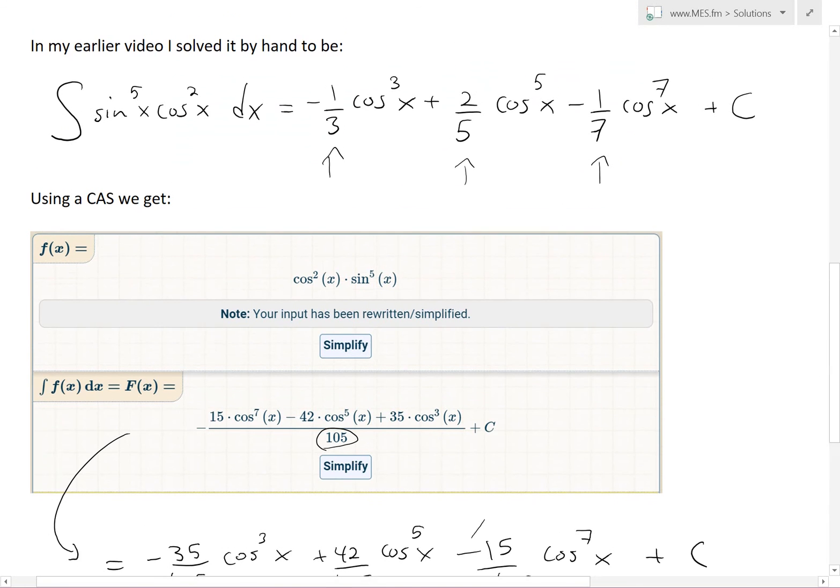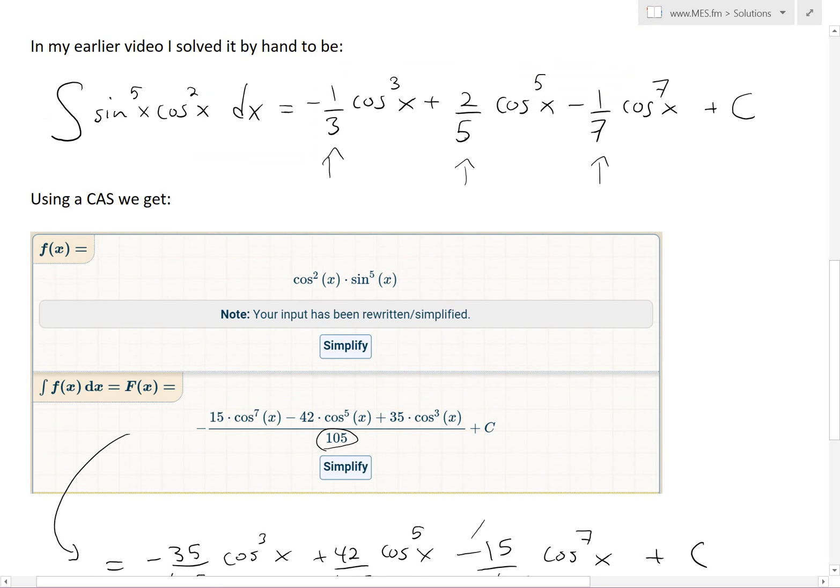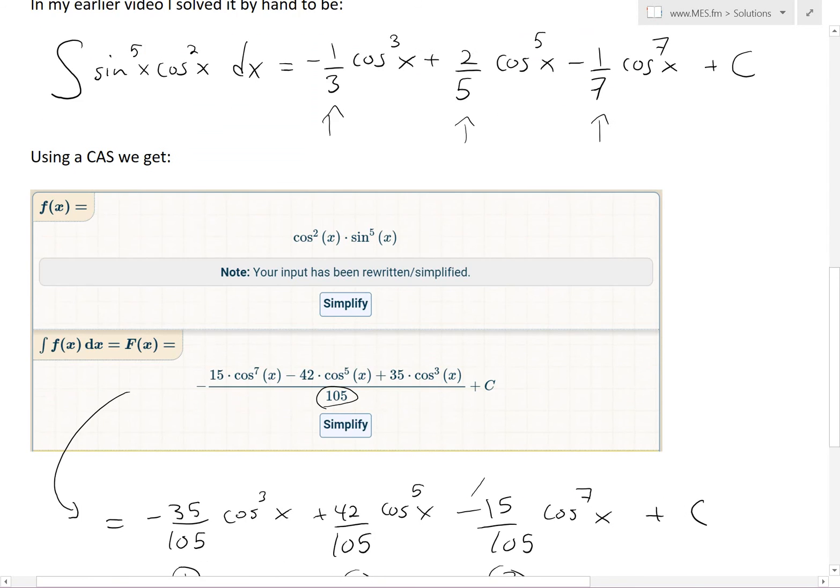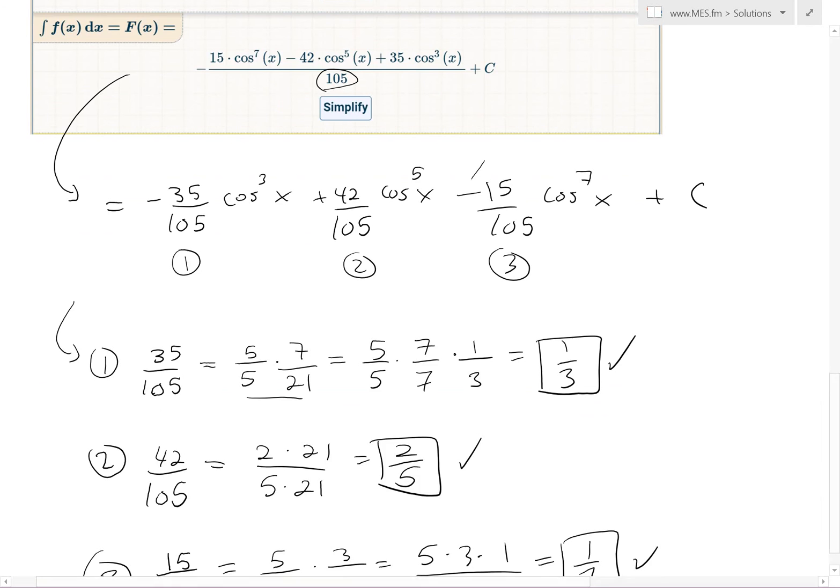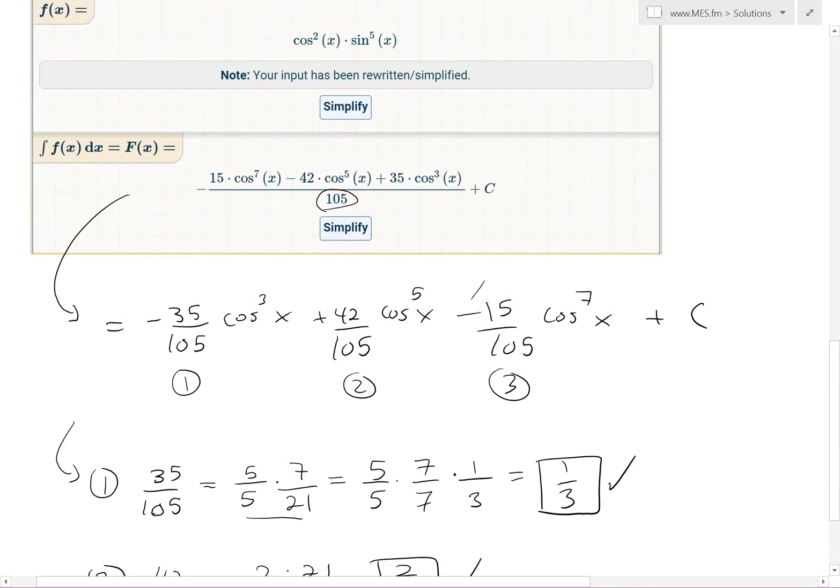And that's exactly what we have right here. 1 over 7, 2 over 5, 1 over 3, and all the signs are the same. Same powers, and there's constant C. So it's the exact same thing, just needed a little bit of rewriting.